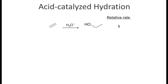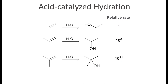Let's compare the relative rates of reactions to see how substituents on the vinylic position affect the rate. The first alkene with no substituents has a relative rate of 1. Adding one substituent increases the rate by a million-fold — 10 to the 6th power. Adding a second substituent increases it even further by a factor of 10 to the 11th. This data tells us that the more substitution you have, the faster the reaction — meaning the intermediate is more stabilized and the activation energy is lower, supporting the carbocation mechanism we saw in hydrohalogenation.